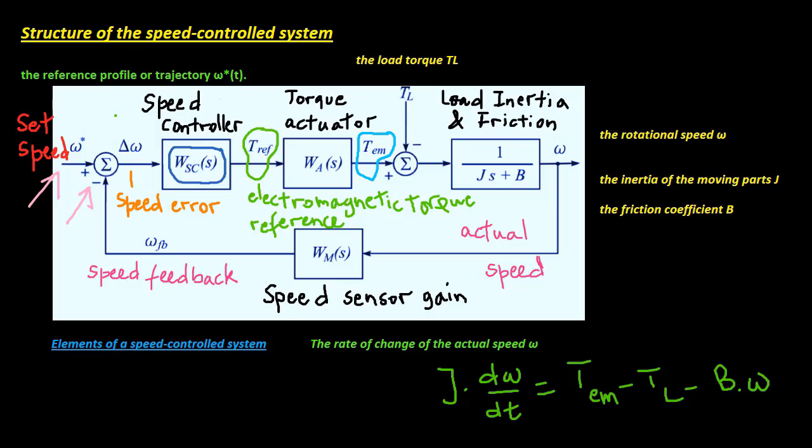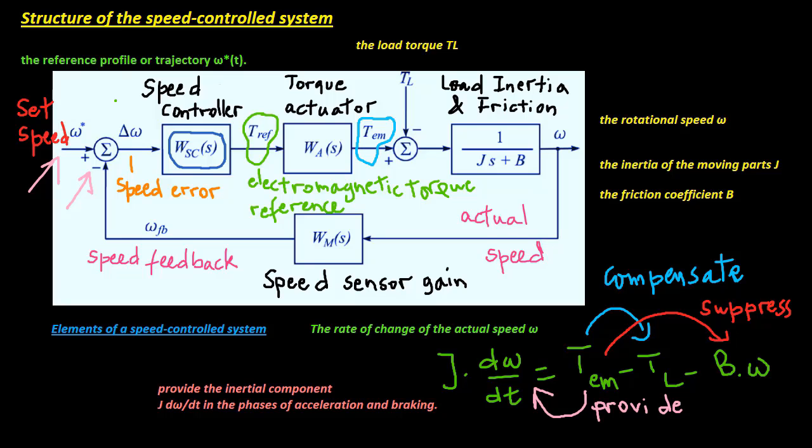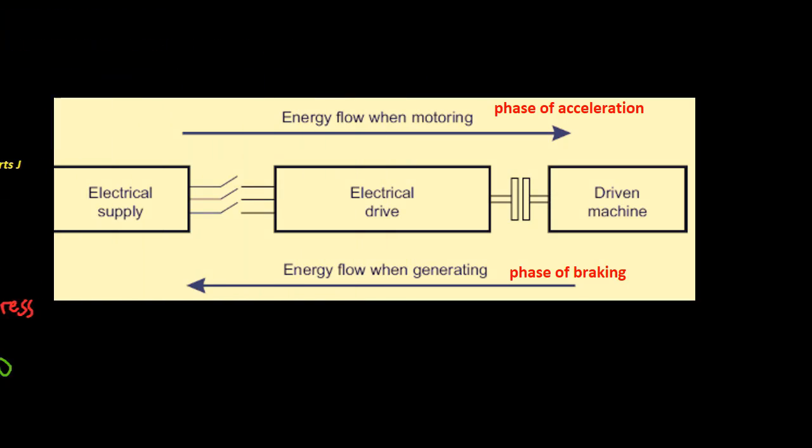The torque TM is the system's driving force, and its role is to make the actual speed omega track the reference omega stern in the presence of disturbances and the load torque TL variations. The driving torque should compensate for the load changes TL, suppress the effects of friction B times omega and other secondary phenomena, and provide the inertial component J times d omega by dt in the phases of acceleration and braking.